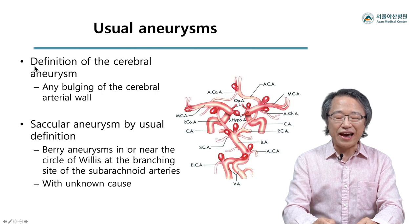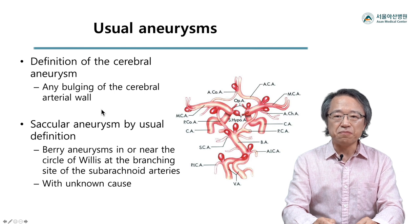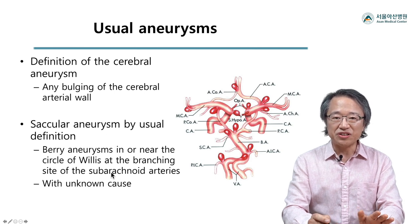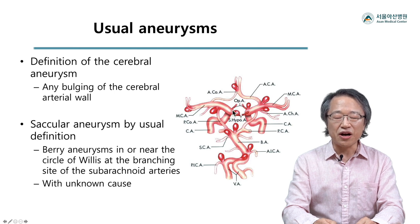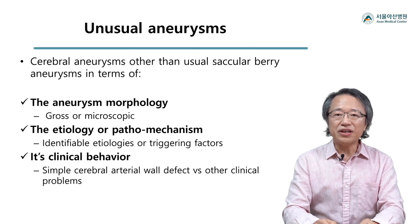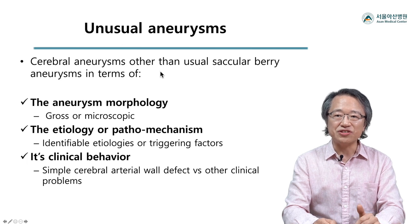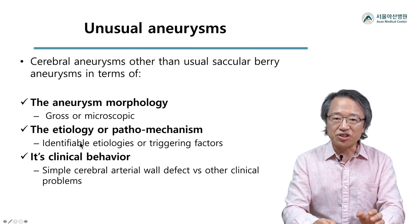We define a cerebral aneurysm as any focal bulging or protrusion of the cerebral arterial wall. If we define a saccular aneurysm at or near the circle of Willis at the branching site of the subarachnoid arteries as a usual aneurysm, then we can define an aneurysm as unusual when the lesion differs in terms of aneurysm morphology, etiology, or clinical behavior.